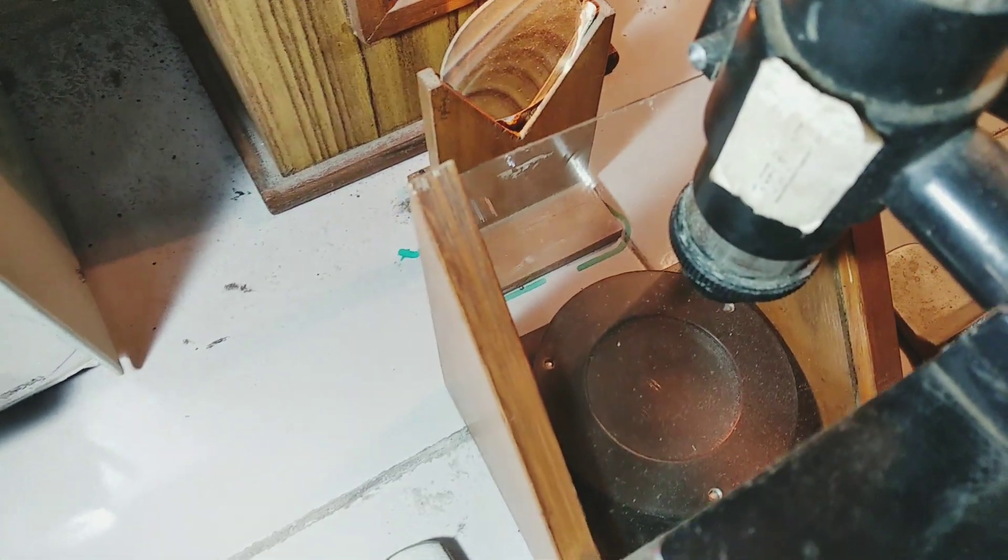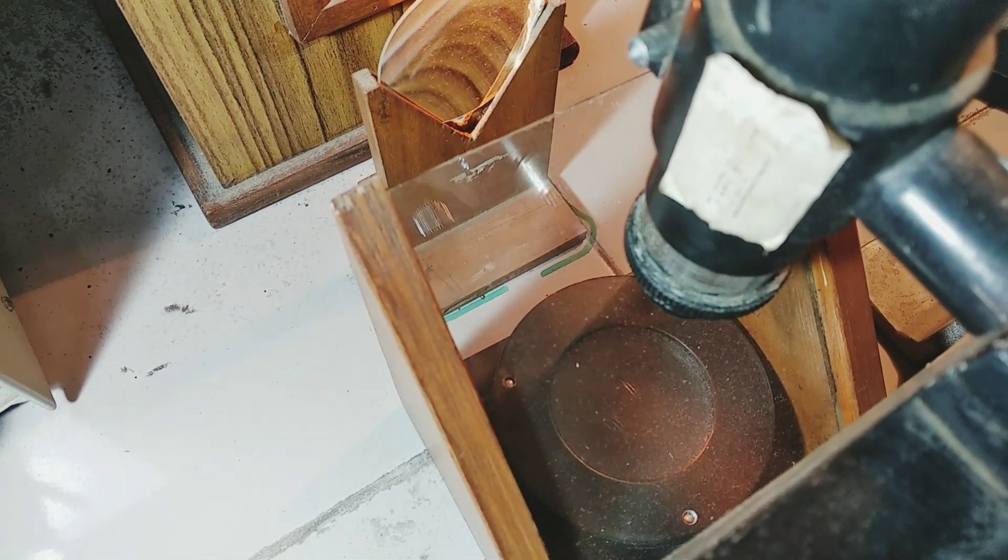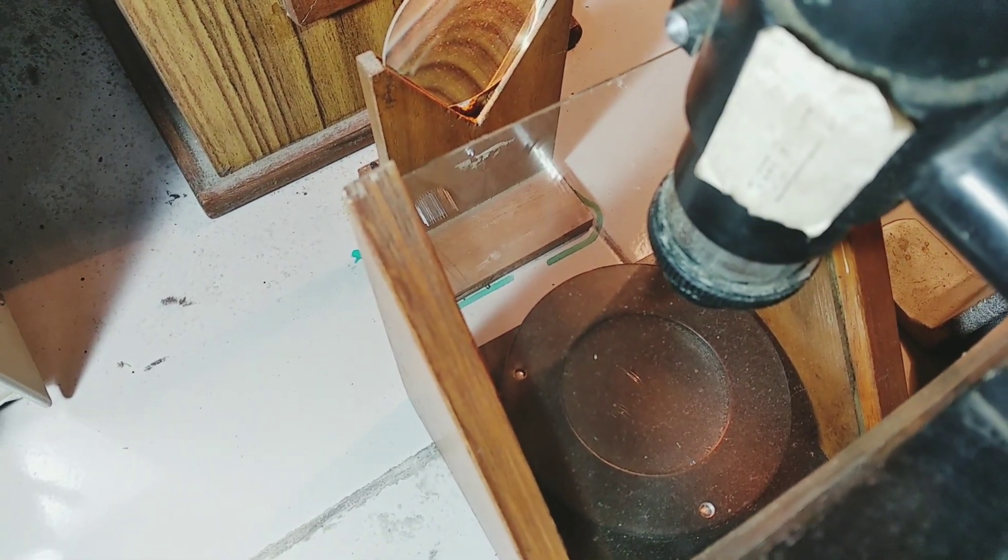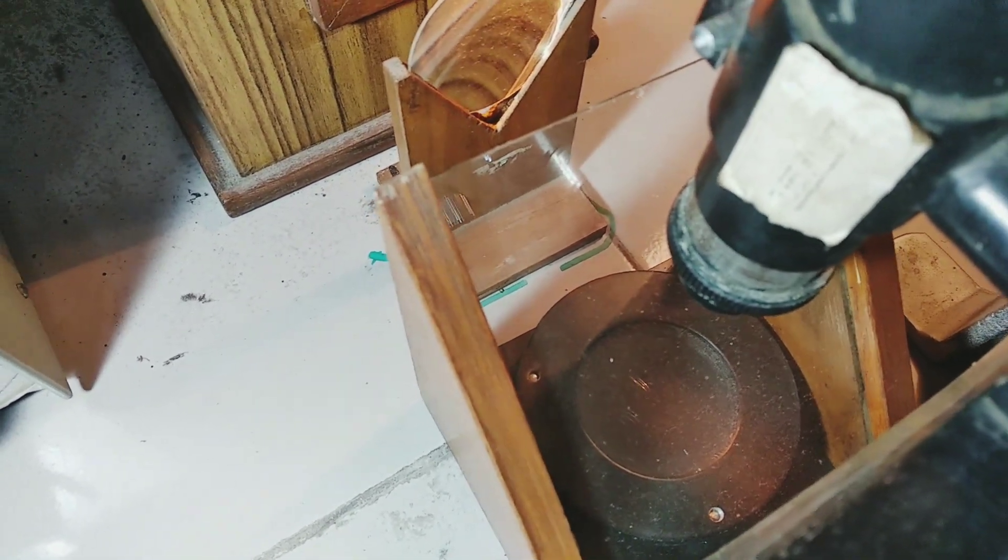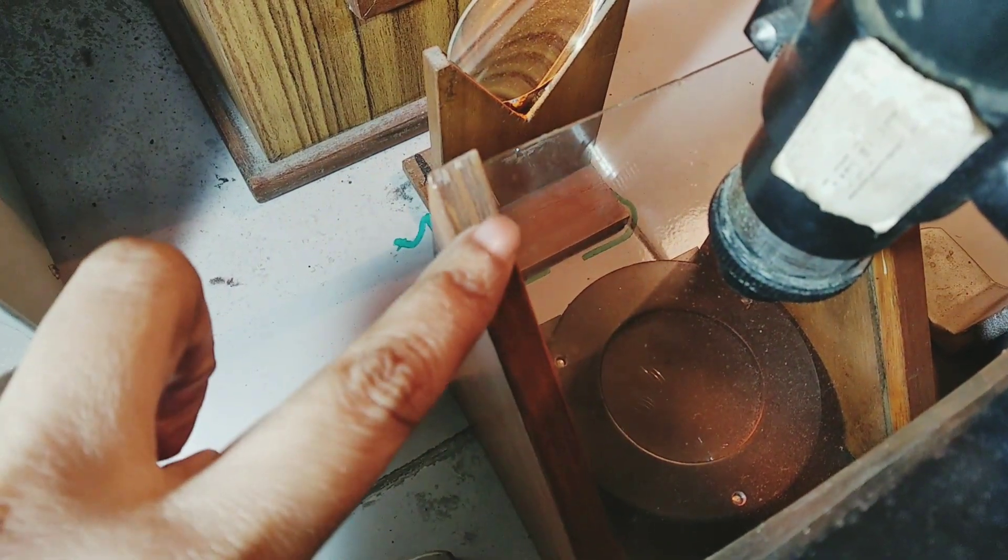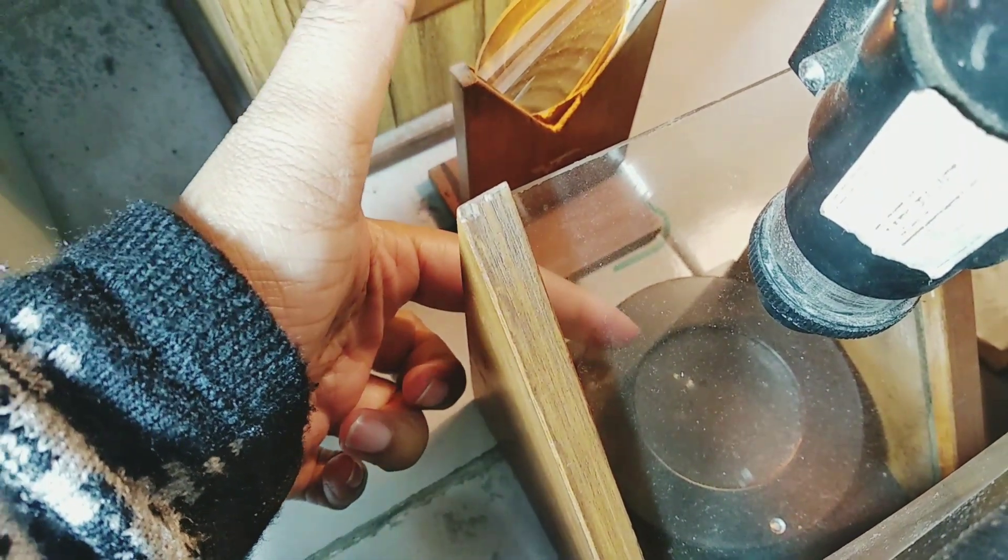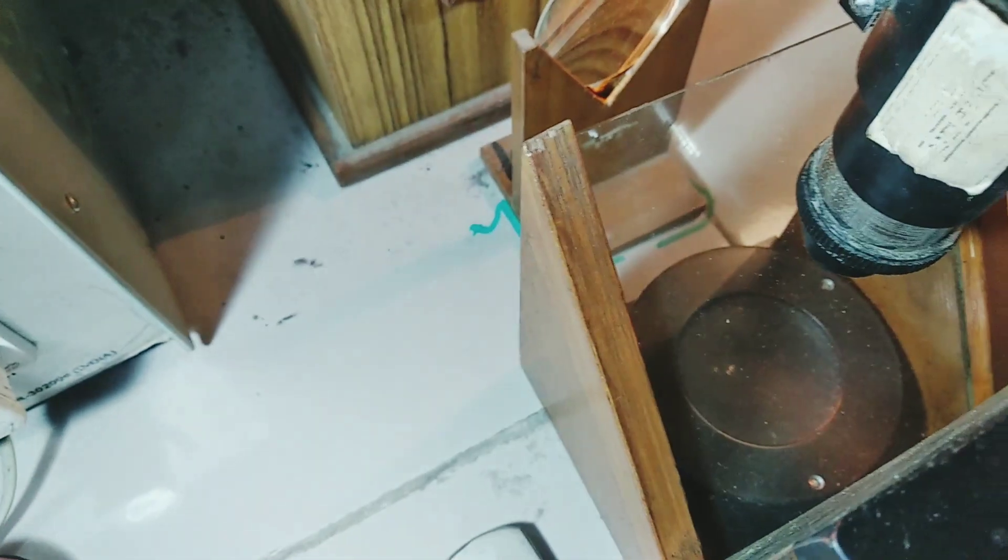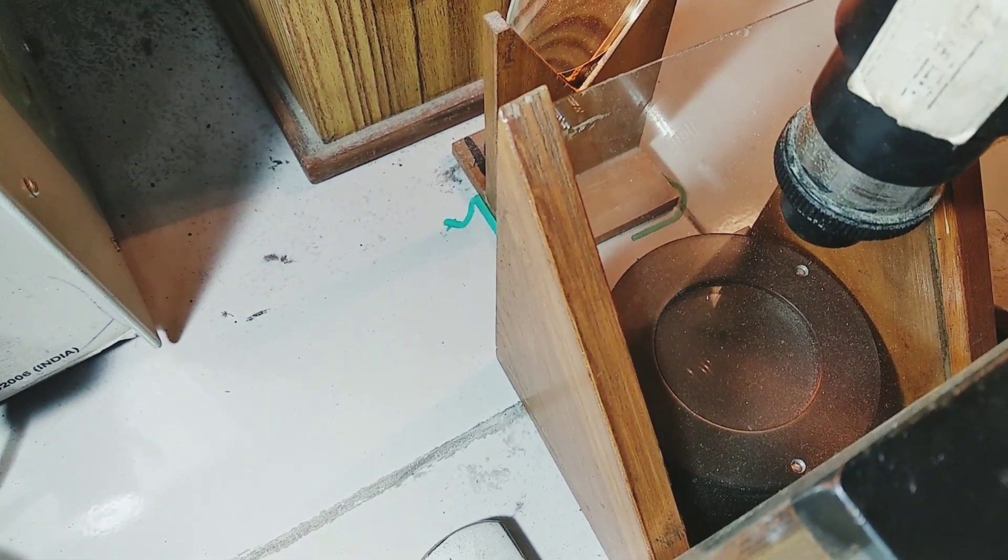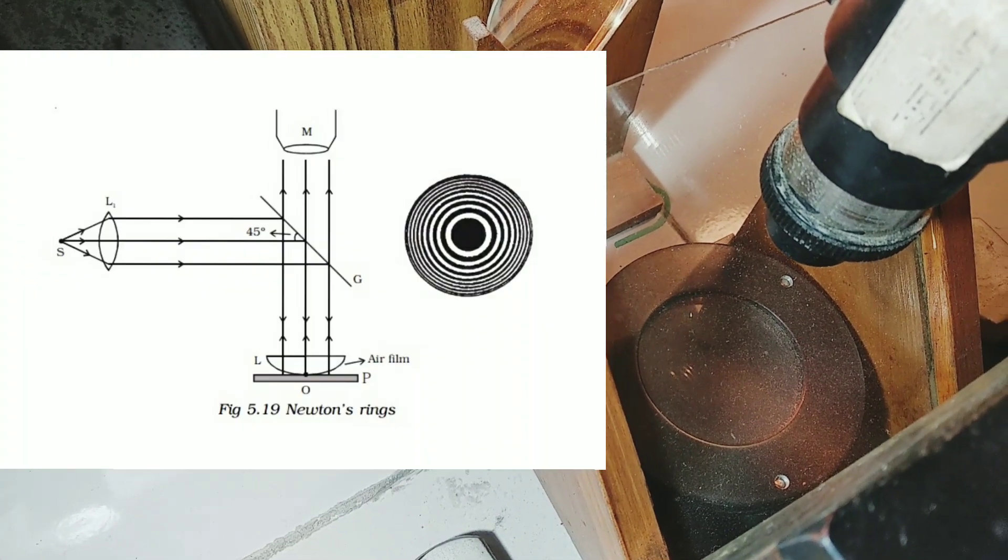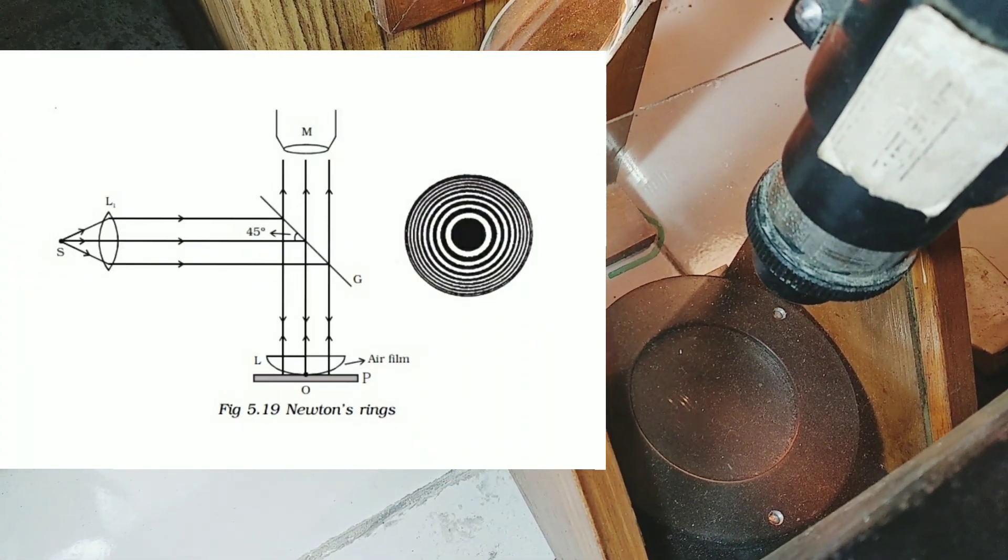When a plano-convex lens, suppose capital L, of long focal length is placed on a plane glass plate. This is the glass plate and this one is the plano-convex lens of large focal length. Then, a thin film of air is enclosed between the lower surface of the lens and upper surface of the glass plate.